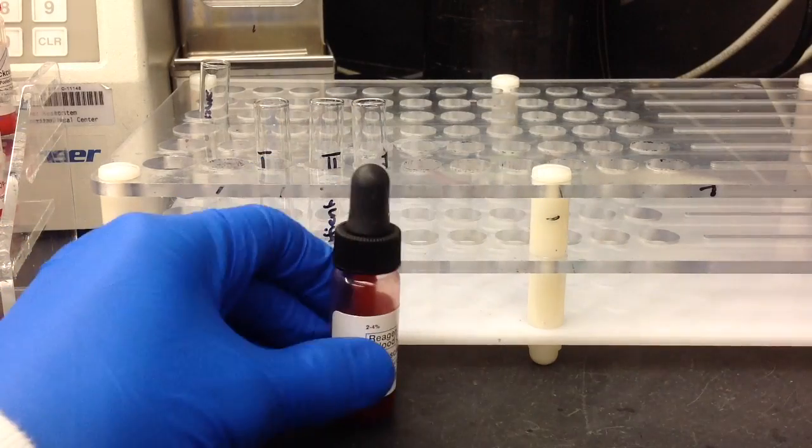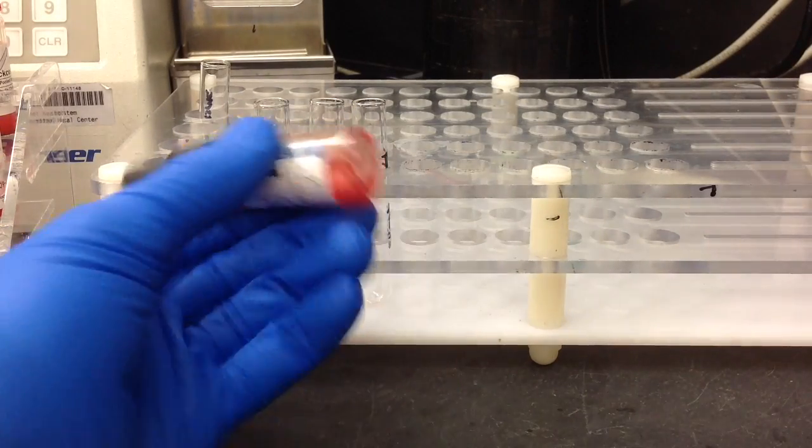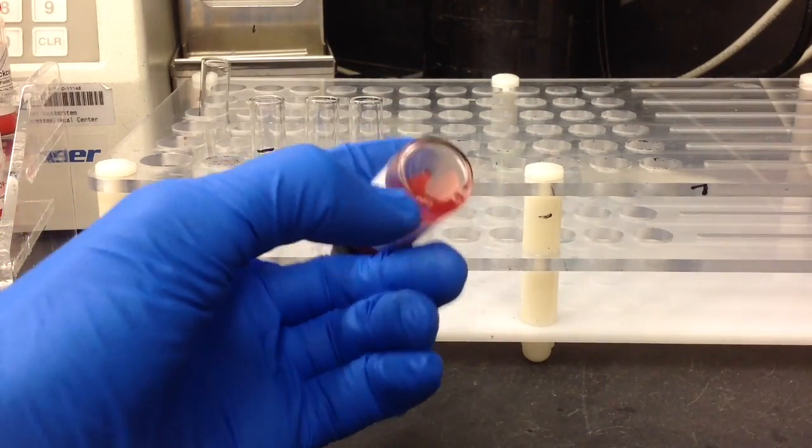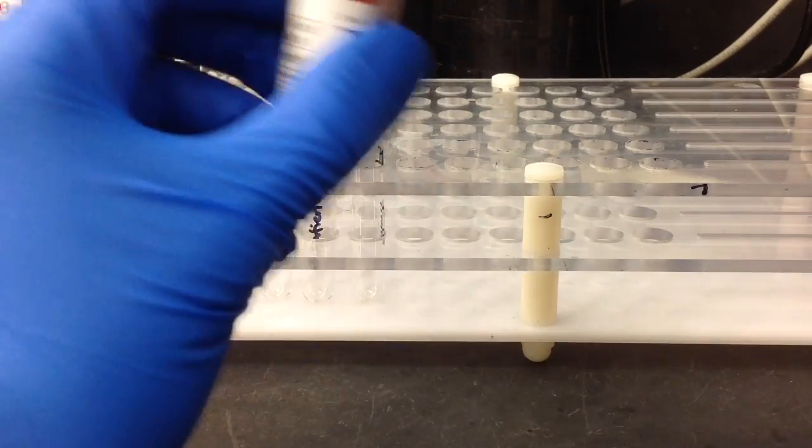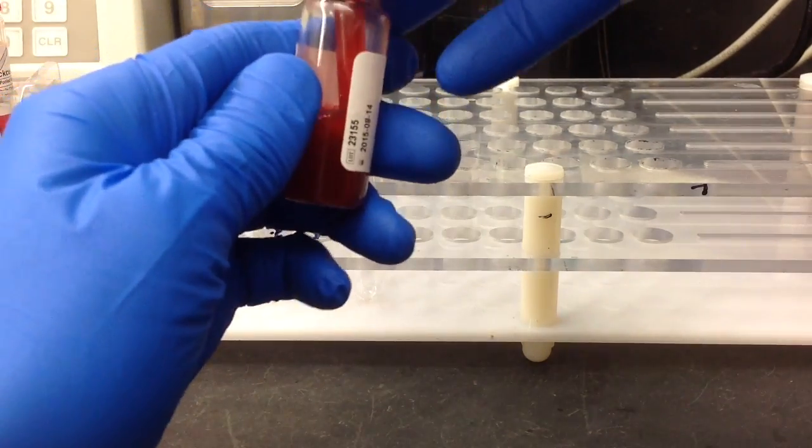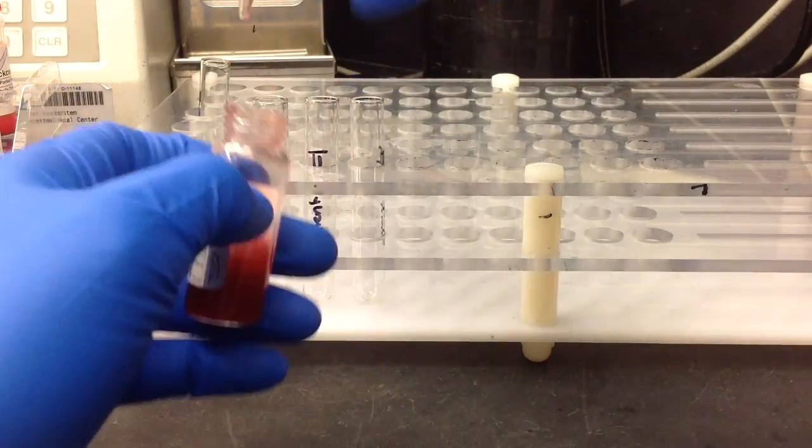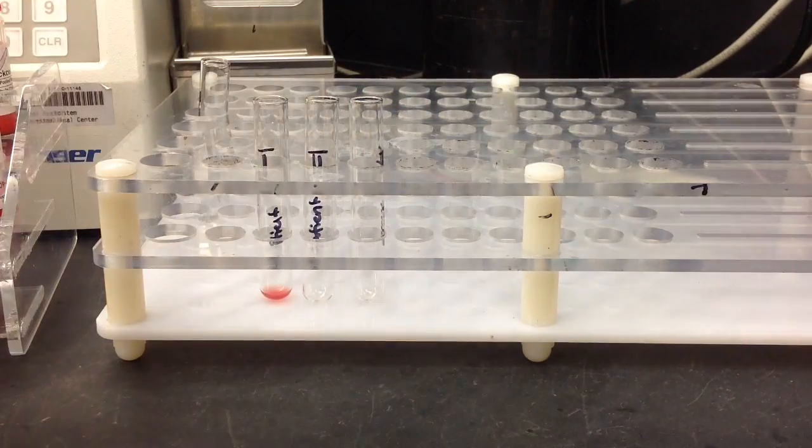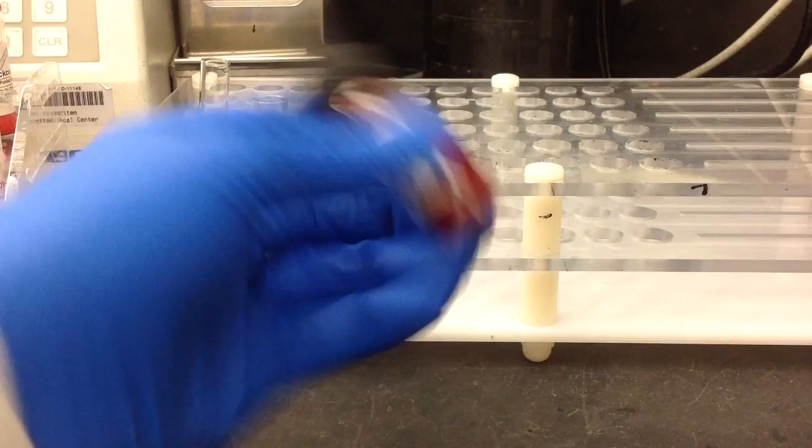Now the first thing you need to do is label your tubes, then get out your screen cells. Make sure you mix them before you add them to the tubes. You're just going to do one drop for each of these screen cells in their corresponding tubes. So just one drop of one, make sure you mix it...